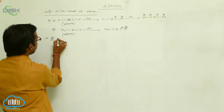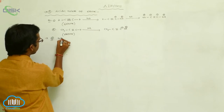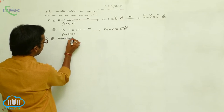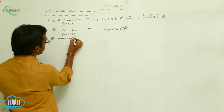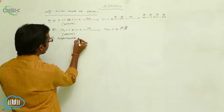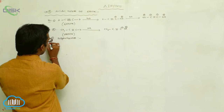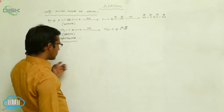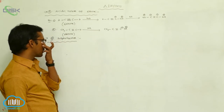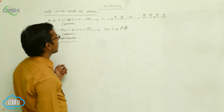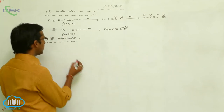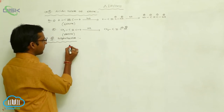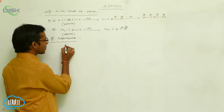The sixth chemical property is polymerization. In polymerization, the combining of monomers produces a polymer. Generally, three moles of ethyne undergo this reaction.